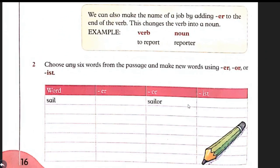We can also make the name of a job by adding '-er' to the end of the verb. This changes the verb into a noun. For example, the verb 'to report' — by adding '-er' it will become the noun 'reporter'. In the same way, 'to teach' — by adding '-er' it will become 'teacher'. Let's solve question number two: choose any six words from the passage and make new words using '-er', '-or', or '-ist'. They have given the word 'sail' — by adding '-er' it will become 'sailor'.